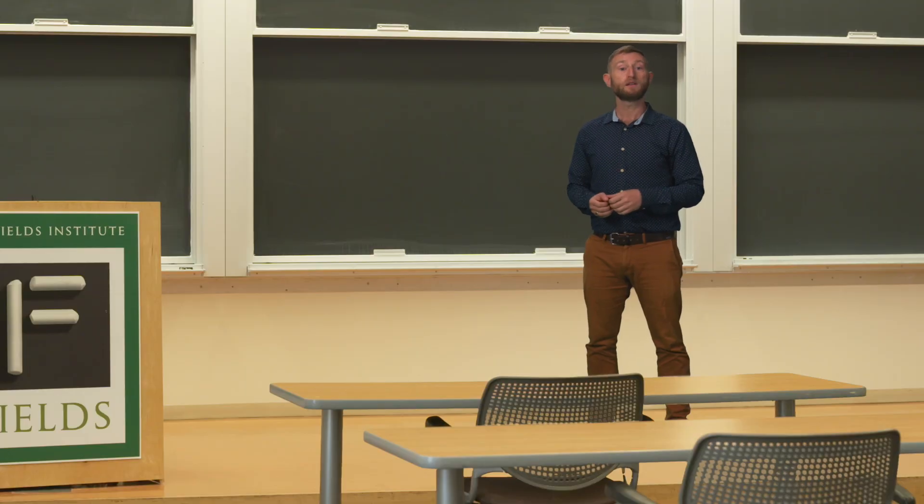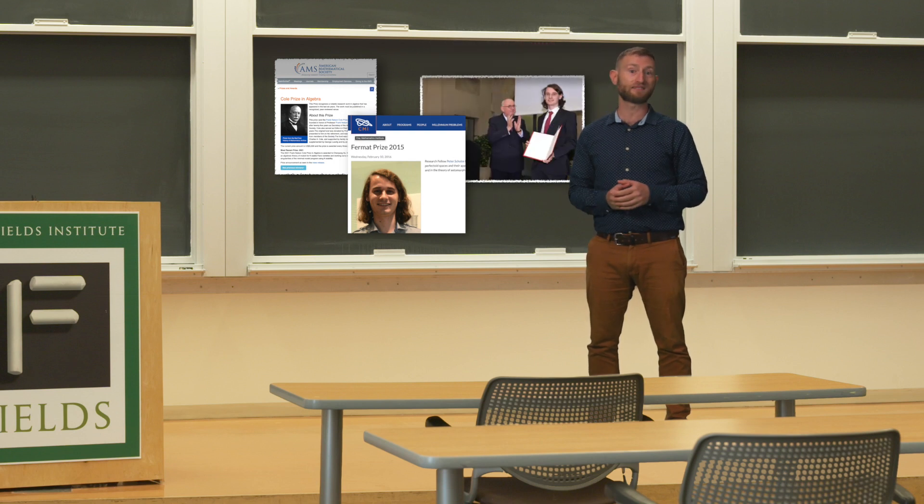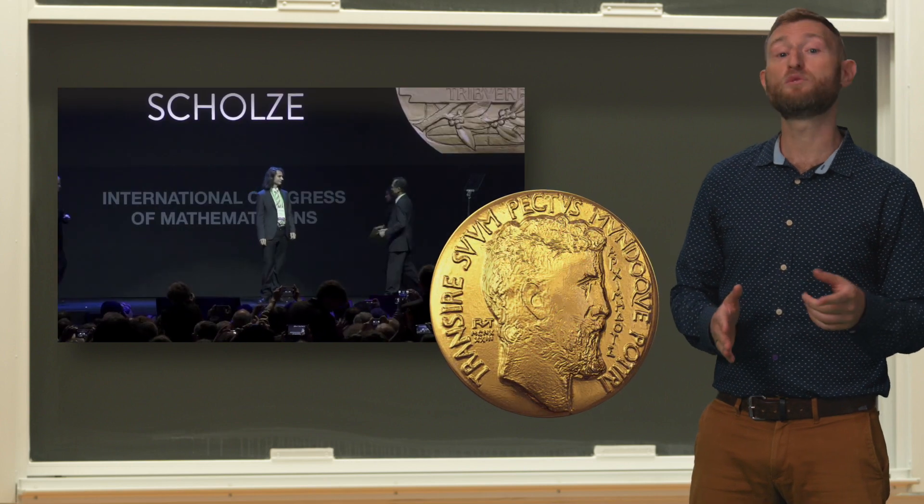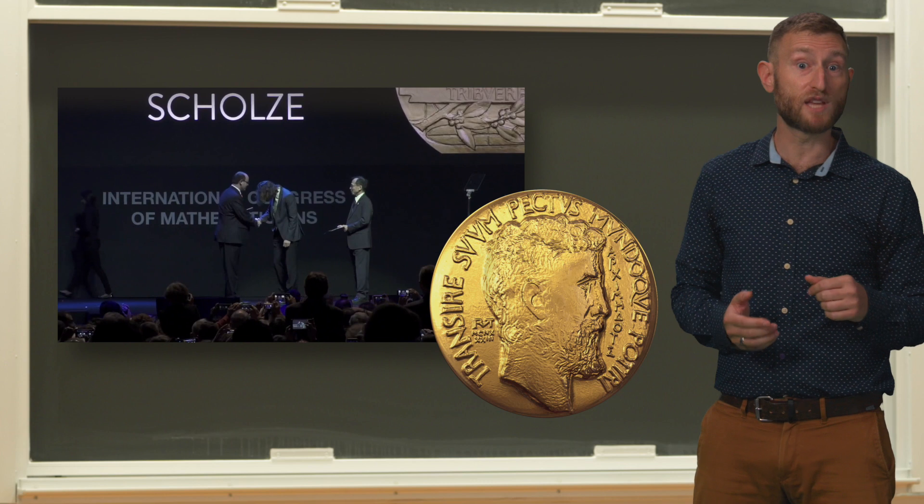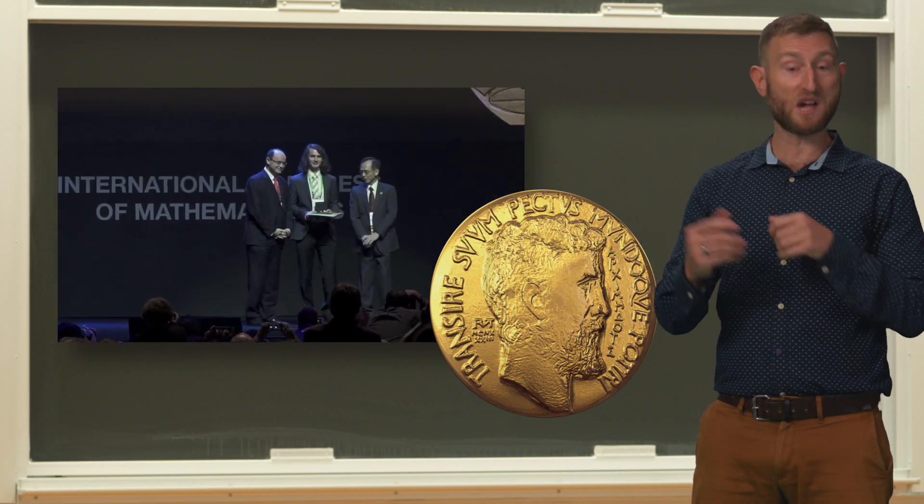In the decade that followed, Scholze would go on to collaborate with many mathematicians and produce articles and books totaling thousands of pages. He would also go on to win many awards, including the Cole Prize, the Fermat Prize, and the Leibniz Prize. As you know by now, Scholze's Fields Medal was awarded in 2018, but already in 2014 there were whispers that a medal was coming his way since he was so young. It was just a question of which year it was going to be.